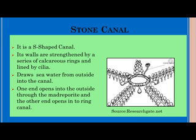The stone canal is an S-shaped canal. The walls of the stone canal are strengthened by a series of calcareous rings and are lined by cilia. The stone canal helps in drawing seawater from outside into the canals through the madreporite. One end of the stone canal opens to the outside through the madreporite, and the other end opens into the ring canal.